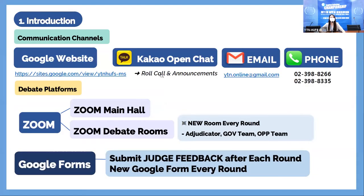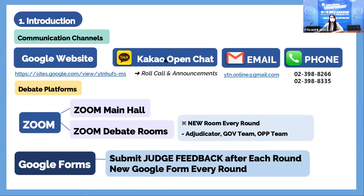As we have this online tournament this year, it's different from what we've done before. We have these communication channels. The Google website is the most important channel you need to always have access to. The second important channel is the Kakaotalk open chat, where there will be roll calls and announcements. You will be able to use your cell phones to access the Kakaotalk open chat, or notebook computers to access these channels.